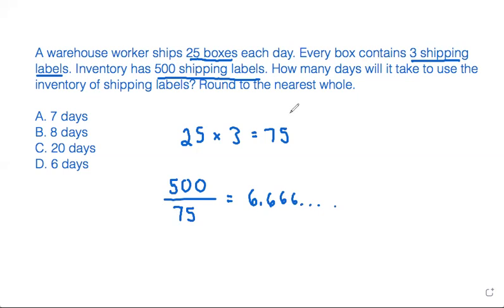The problem says to round to the nearest whole. The whole number is the ones digit, so we need to round to this ones digit. The digit to the right of the ones digit is 5 or larger, so that means we need to add one to the 6. So that makes 7 days.